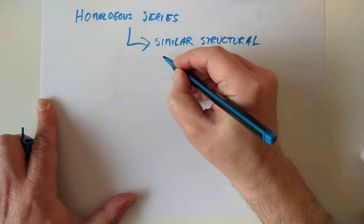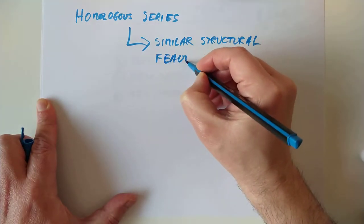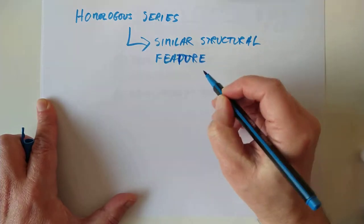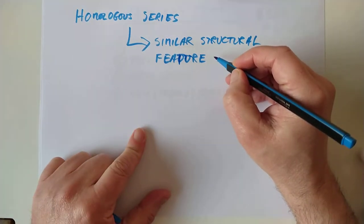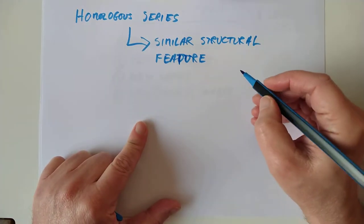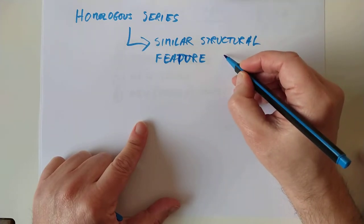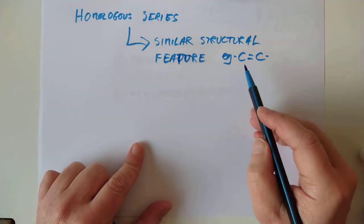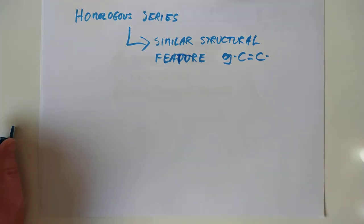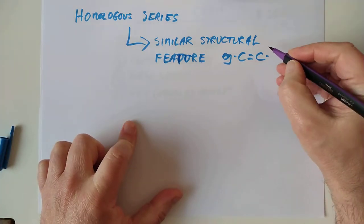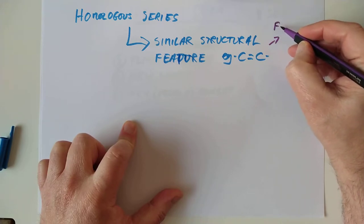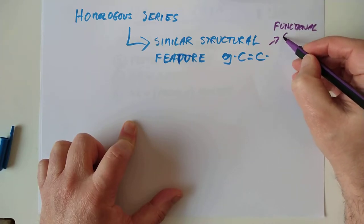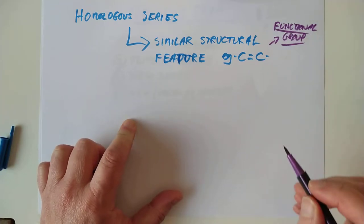They have a similar structural feature — that's how you would recognise a member of a particular series. To throw an example: the alkenes all had a double bond between two of the carbons. This is sometimes in higher chemistry called a functional group. If I slip that name in from time to time, I just mean how you spot that particular series.